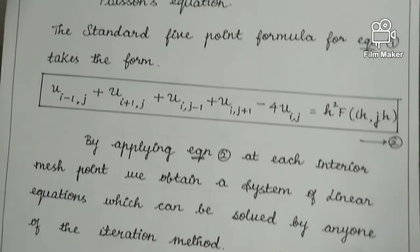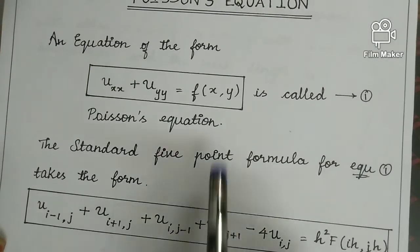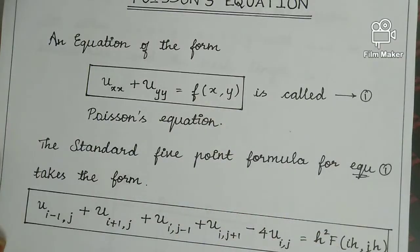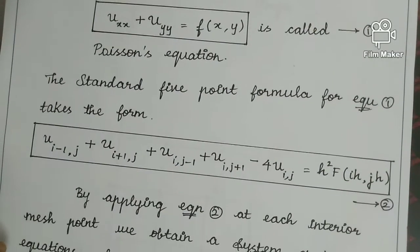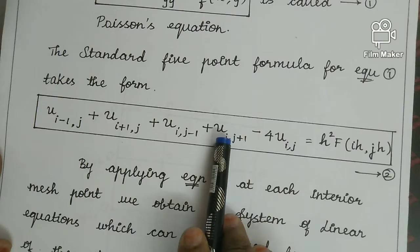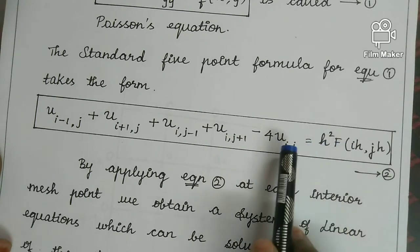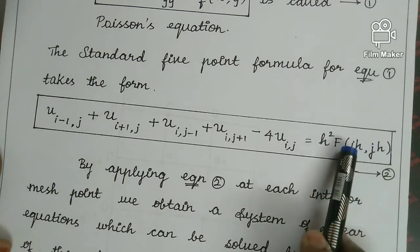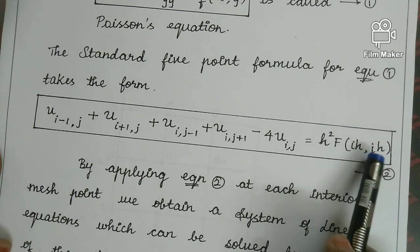The standard five-point formula for Poisson's equation takes another form given by equation 2. At each mesh point, we substitute the values of i and j, where h is the mesh length. This gives us equations involving u1, u2, u3, and so on.